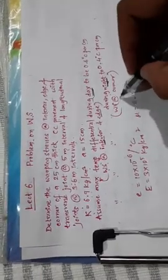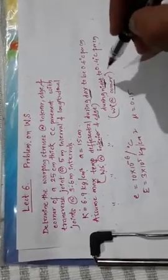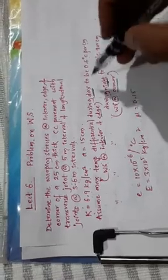Calculate warping stresses at corner. When you calculate in the corner you use this, when you calculate in the interior and edge you use this as a temperature. E is given as this much, mu is 0.15.